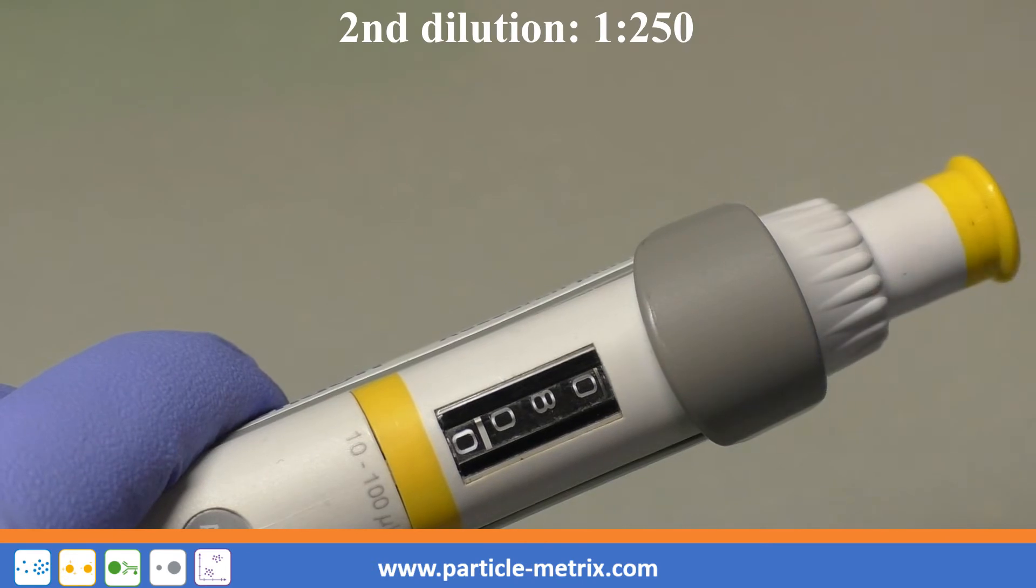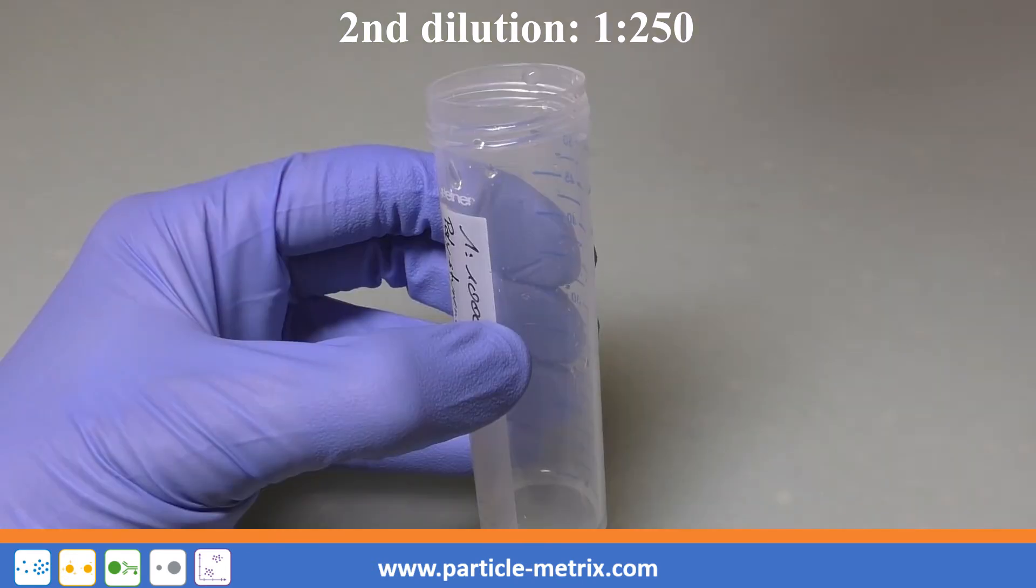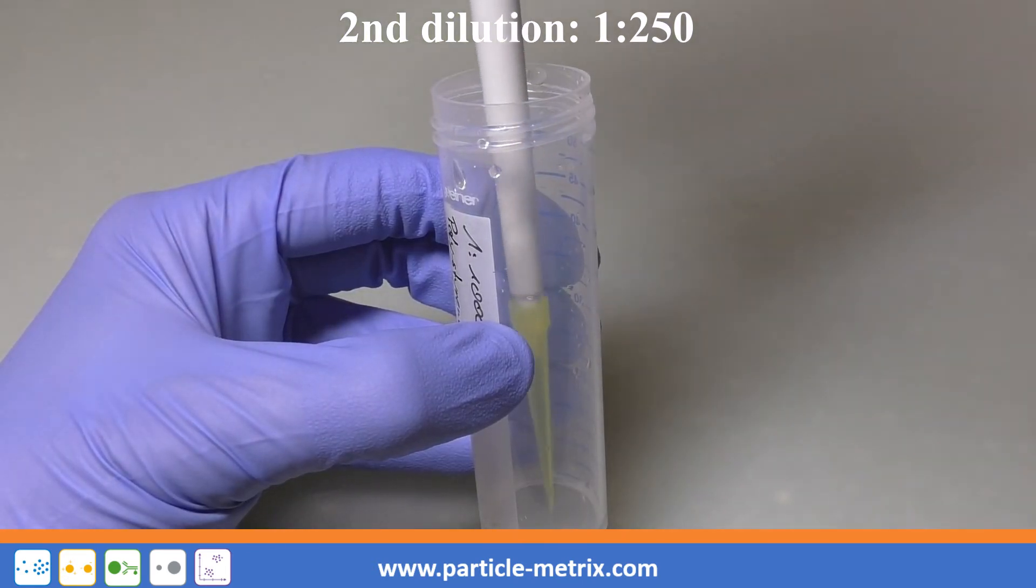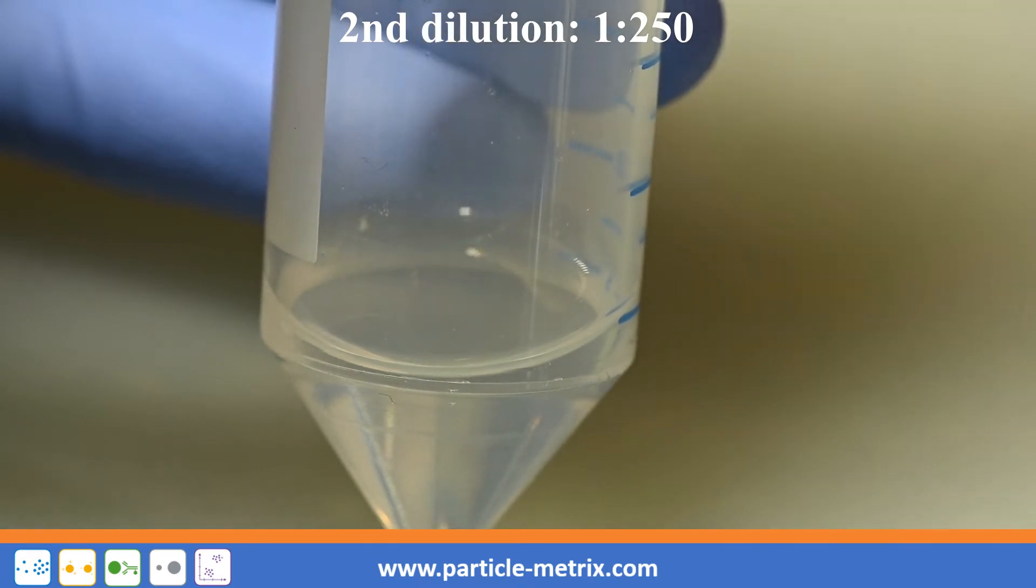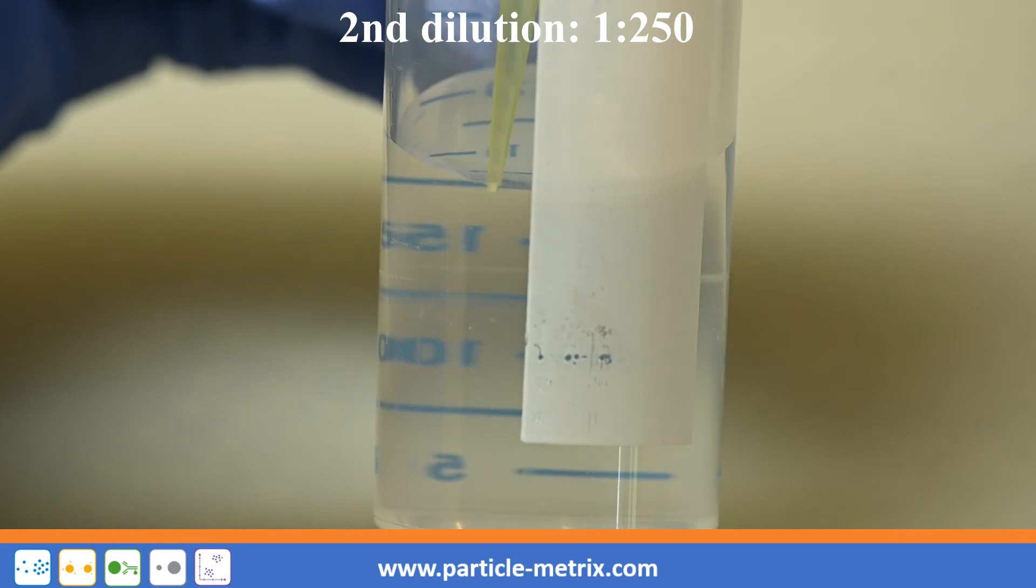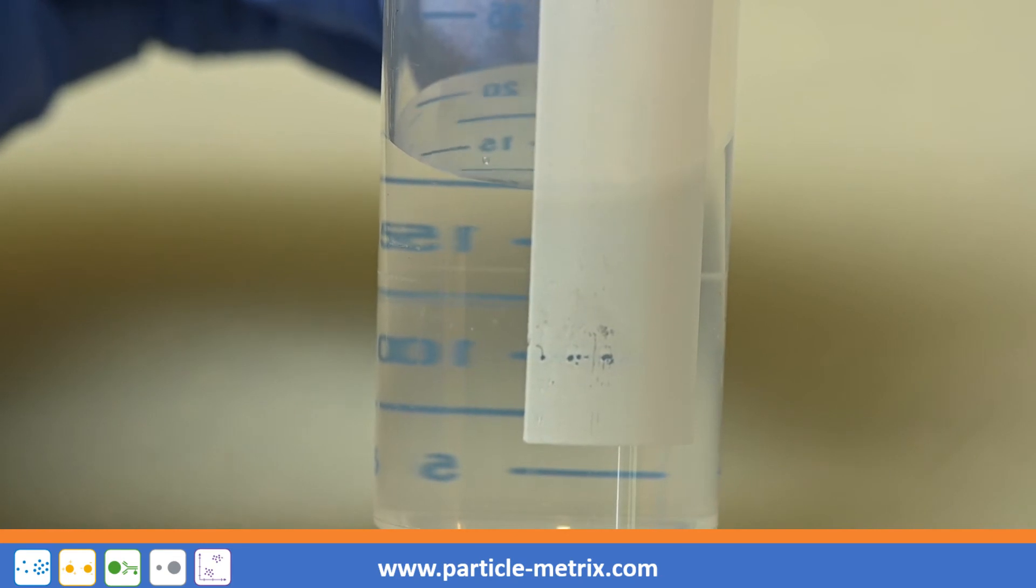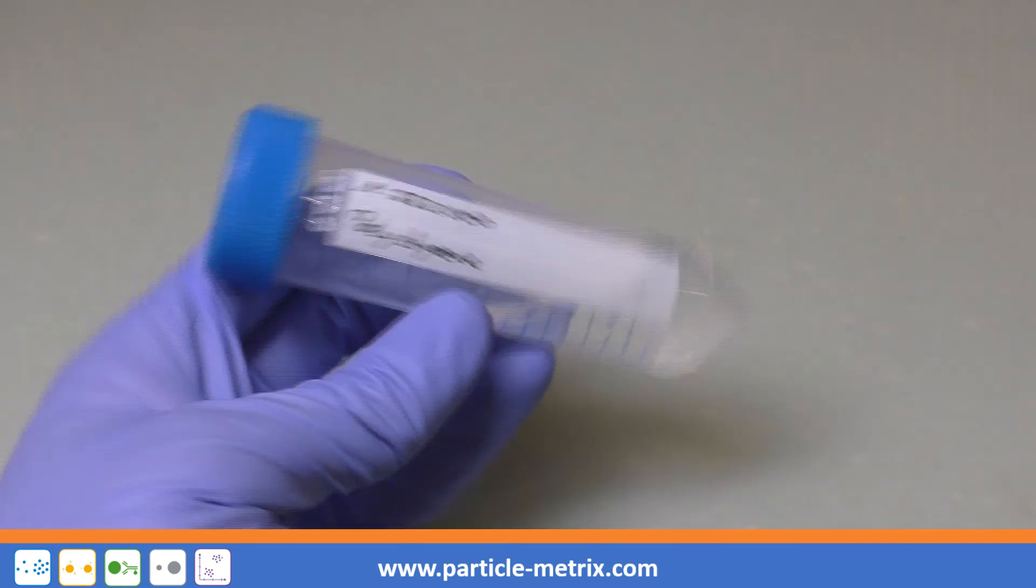In the second dilution step, pipette 80 µL from the 1 in 1000 dilution from the first step into 20 ml of particle-free water. This results in a final dilution of 1 in 250,000. Again, scale up or down according to your requirements.